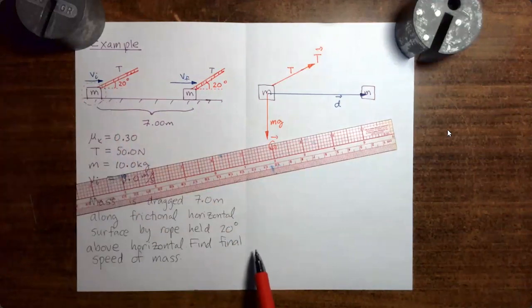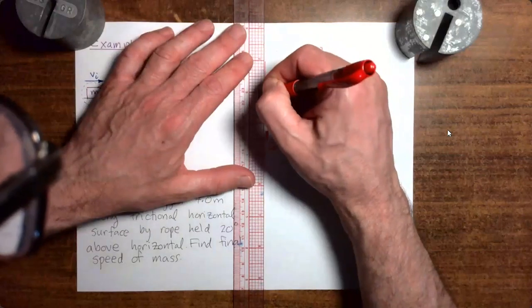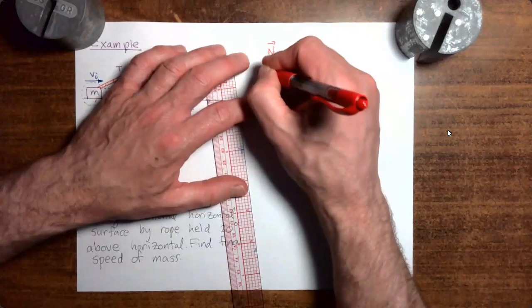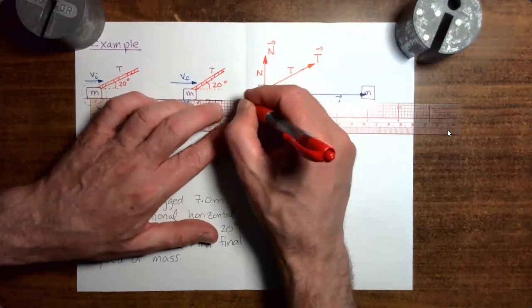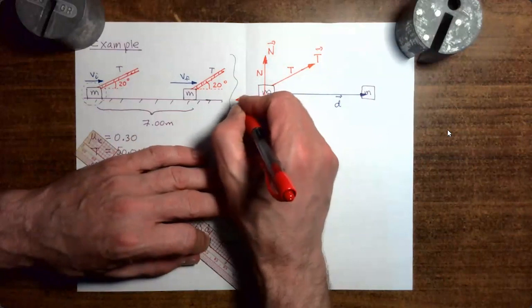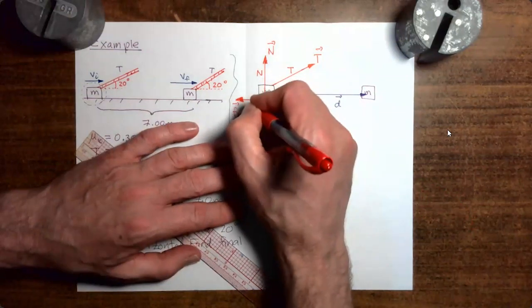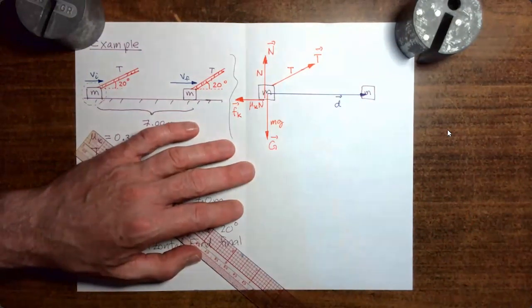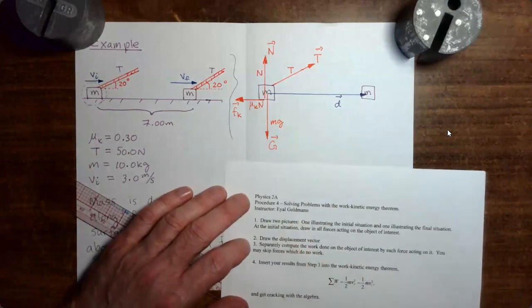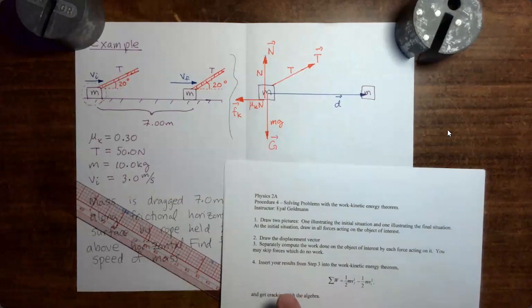As you follow the dashed line around, you see the other thing reaching in through the dashed line to touch the mass is the floor. In this problem, the floor is going to be exerting both a normal force and a frictional force. So I'll put in the normal force first, and then we have the kinetic frictional force opposing the rightward motion of the mass, with magnitude mu_k times N. So there we did steps one and two together. Now we go to step three, which is to separately compute the work done on the object of interest by each force acting on it.